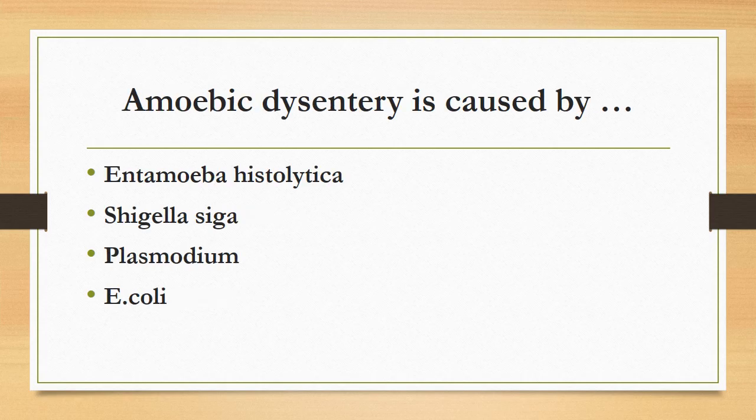Amoebic dysentery is caused by: Entamoeba histolytica, Shigella, Plasmodium, or E. coli? The correct answer is Entamoeba histolytica. Amoebic dysentery is caused by Entamoeba histolytica, while bacillary dysentery is caused by Shigella.